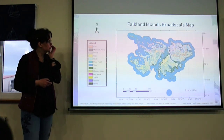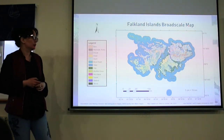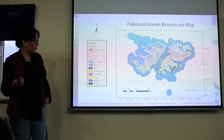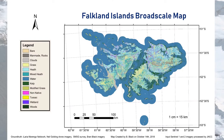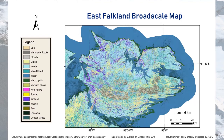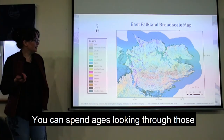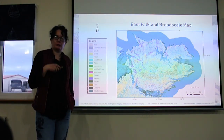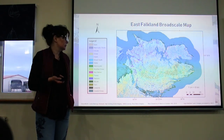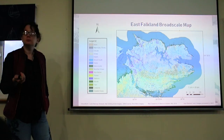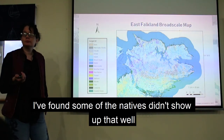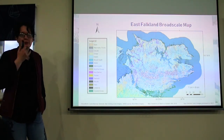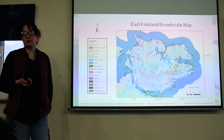Just to get these back in your mind's eye — what they look like for the Falklands as a whole, and then just East Falkland. It's actually really fun to go back and toggle back to the original imagery and see what does and doesn't show up. Sometimes frustrating, but interesting. For example, some native species didn't show up that well — there's a lot of confusion with some of the grasses. We probably need more ground truthing control on some of the grasses, to be honest.